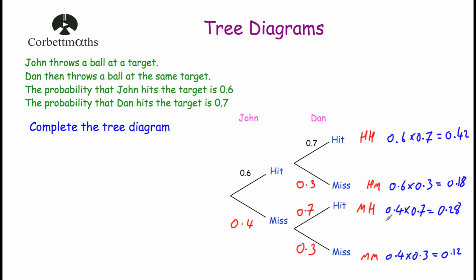We've found the probability of each outcome. It's also useful to note that all the probabilities add together to equal 1, because these are the only possible outcomes — hit-hit, hit-miss, miss-hit, and miss-miss. So 0.42 + 0.18 + 0.28 + 0.12 = 1.